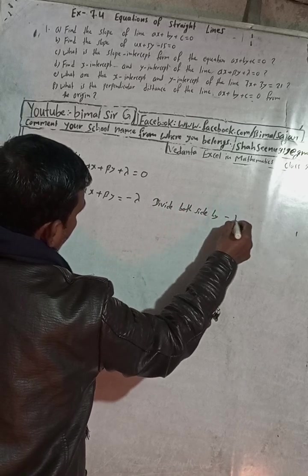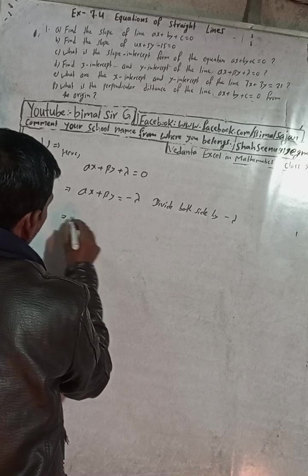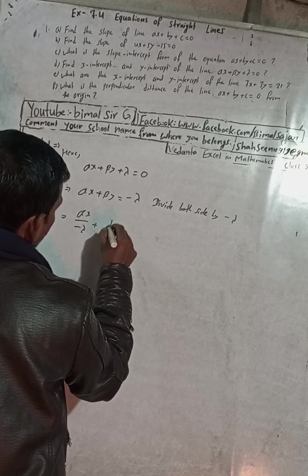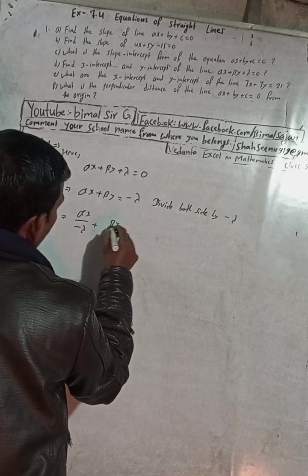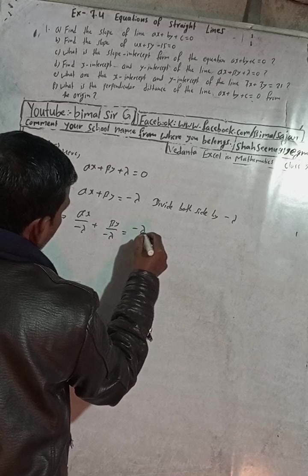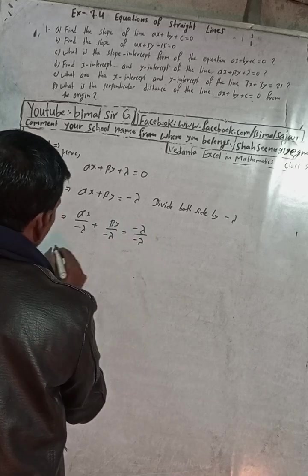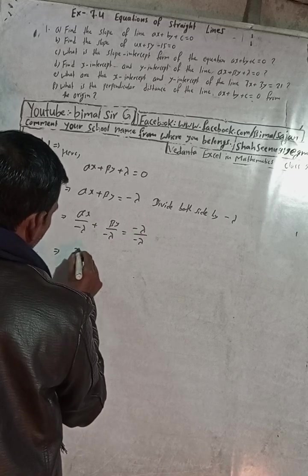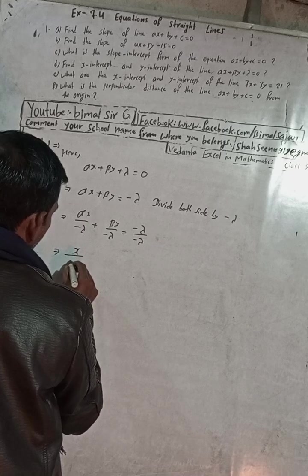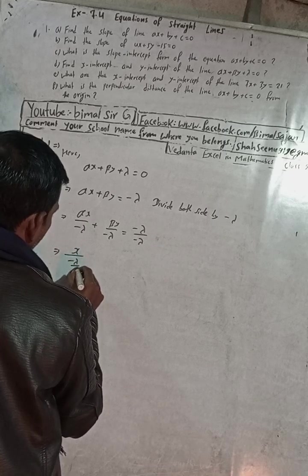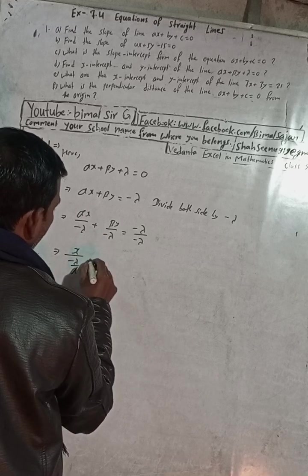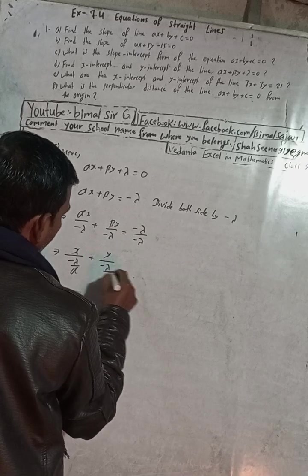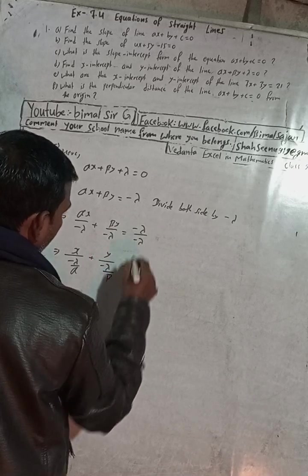Dividing both sides by -γ gives: (αx / -γ) + (βy / -γ) = 1, which can be written as x/(-γ/α) + y/(-γ/β) = 1.